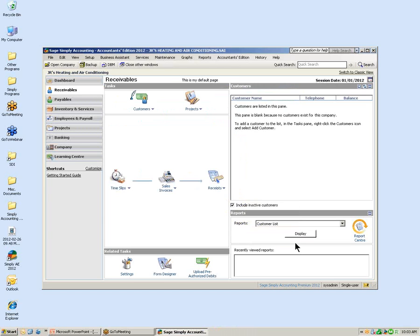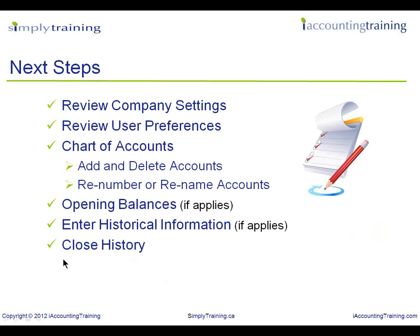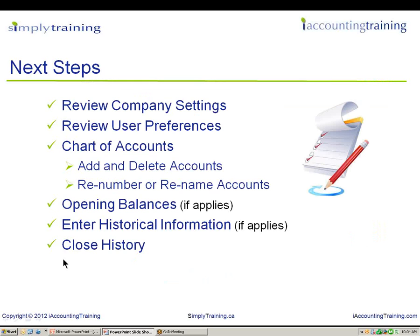Now that your company has been created, let's go over a checklist of next steps we recommend. First, make sure you review your company settings — these are global settings within Simply Accounting that you can customize for your particular business. Also review your user preferences window, where you can set up preferences to your liking. After that, go into your chart of accounts and add or delete accounts you do not require. You can also renumber and rename accounts for your industry type.